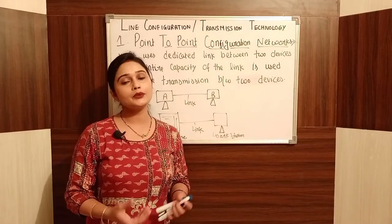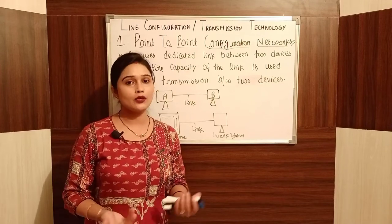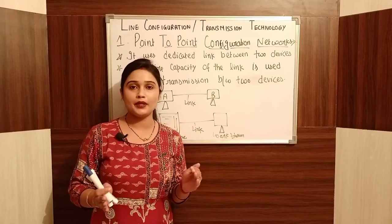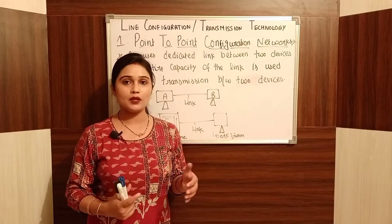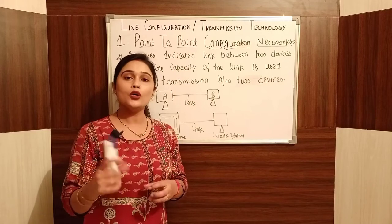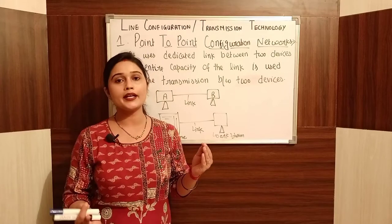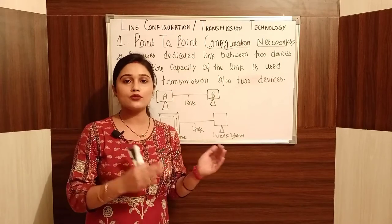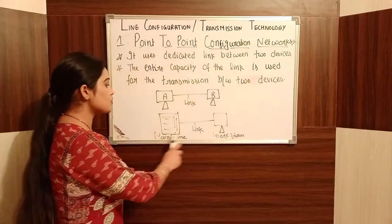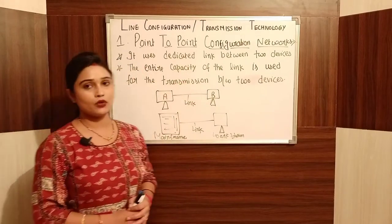When data is packed, it uses the entire capacity of the transmission media — for example, one GB per day. The data is directly connected between only two devices. That direct connection is called the point-to-point configuration network — it is only connected to two devices.